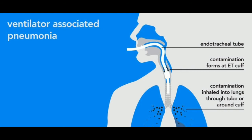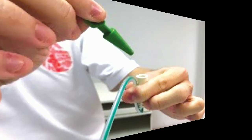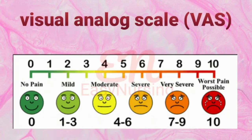The FAST HUG mnemonic is used to reduce the incidence of ventilator-associated pneumonia and to identify drug-related problems in the ICU. Here, F denotes feeding, like total parenteral nutrition, enteral, or NBM — that is nil by mouth. A denotes analgesic; the patient can be assessed by VAS chart, that is the visual analog scale. S is sedation, like fentanyl.